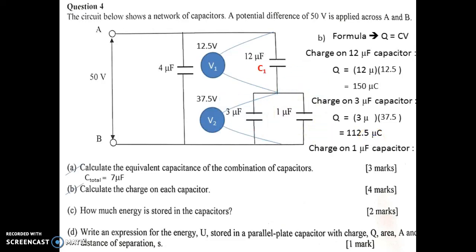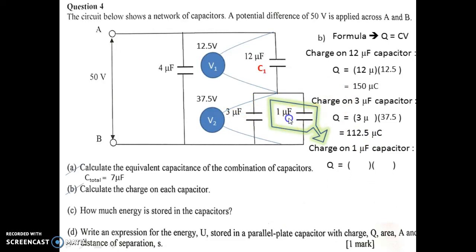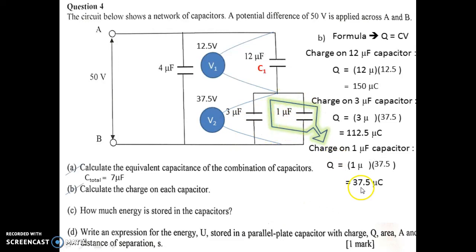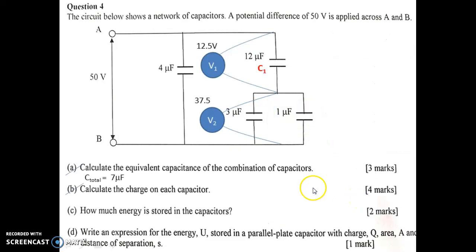Next, the charge on the 1 µF capacitor. The capacitance is 1 µF and the voltage across it is 37.5 V, because it is arranged in parallel with the 3 µF capacitor. So the charge on the 1 µF capacitor is 37.5 µC. That completes question B.